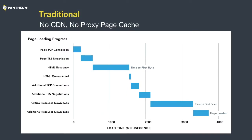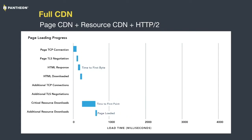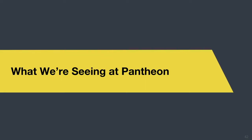You can see how the time to origin for the HTML response plus all critical resource downloads can push up load time significantly. By having resources cached closer and delivered over modern protocols, you keep winding that time in. You can actually start delighting users — below a second creates positive psychological associations with the site, whereas 2.4 seconds is more of an impatience threshold.